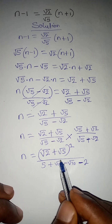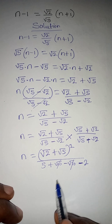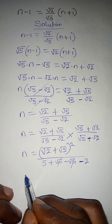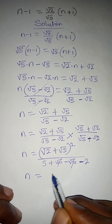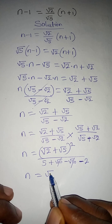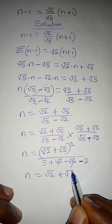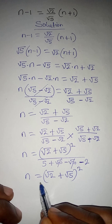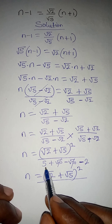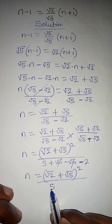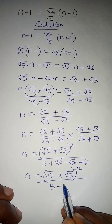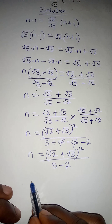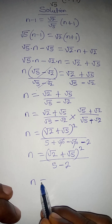The plus root 10 and minus root 10 eliminate each other. So proceeding, n equals root 2 plus root 5, all squared, over 5 minus 2, which gives us 3.